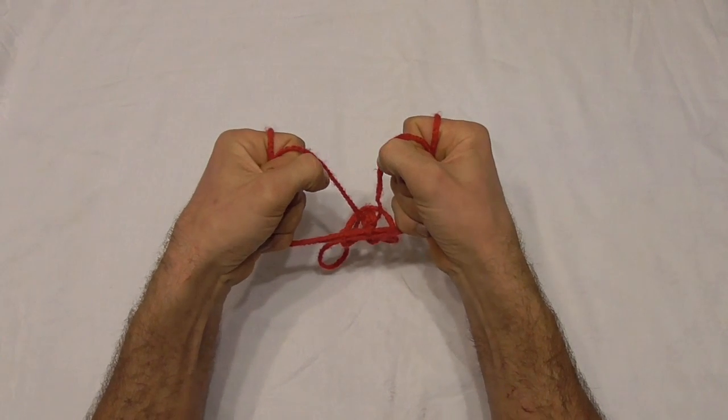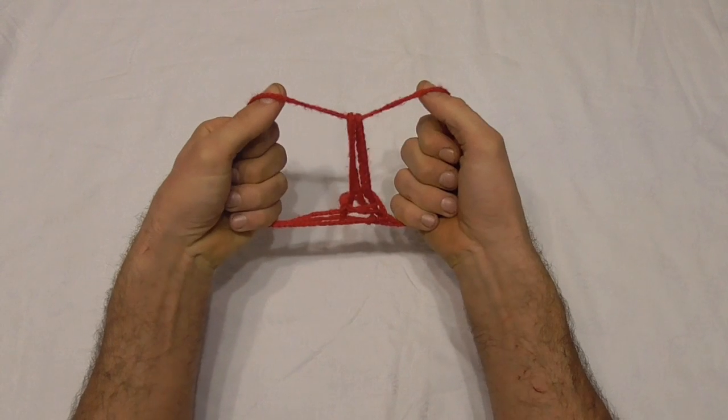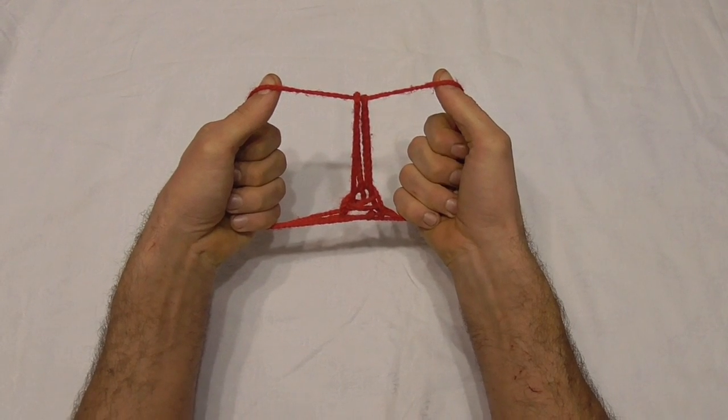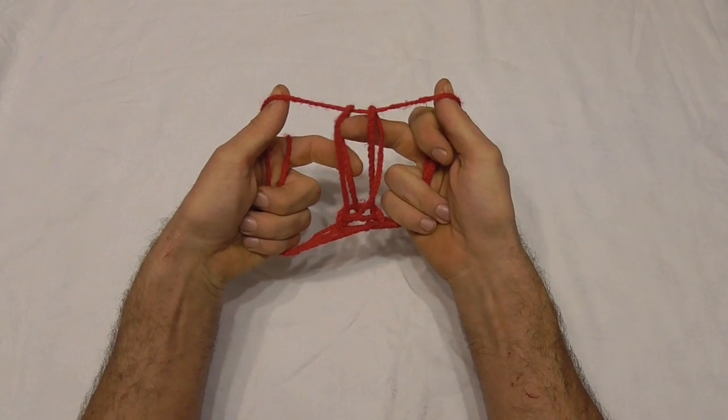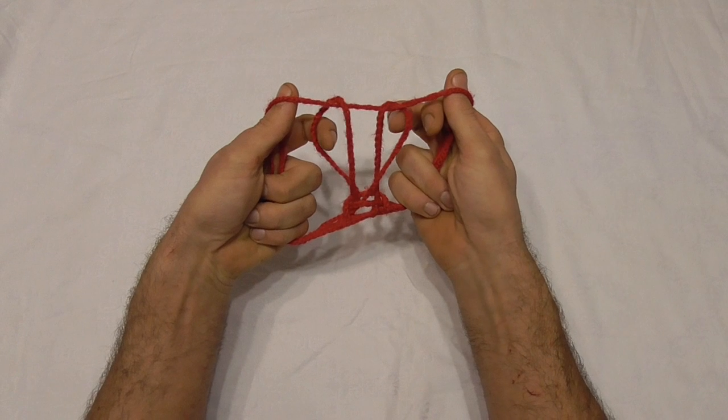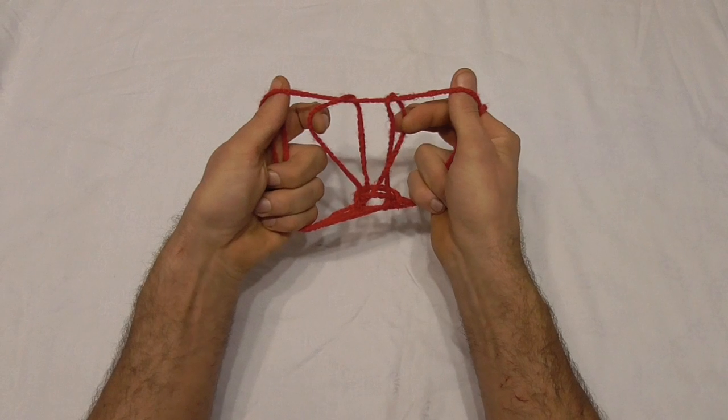And now if we pull it and lift up that top string, the bunny should appear. And we just need to adjust the ears a little bit. And there you have the bunny string figure.